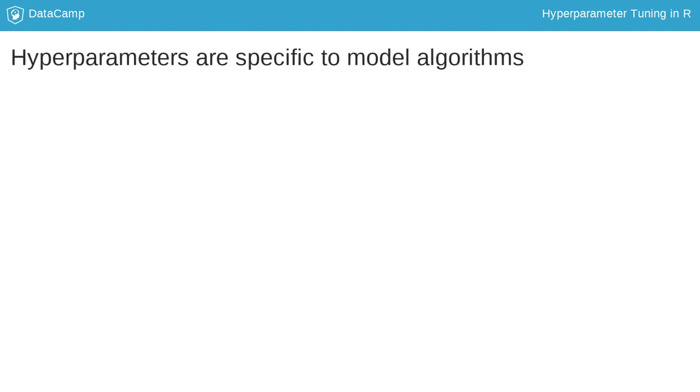Different algorithms have different hyperparameters. You might be wondering how you would know which hyperparameters you can tune with these different methods in Caret. If you know the model abbreviation, you can use the model lookup function. But the easiest way is to use the online documentation of Caret. Click this link on the slide to go to the page.